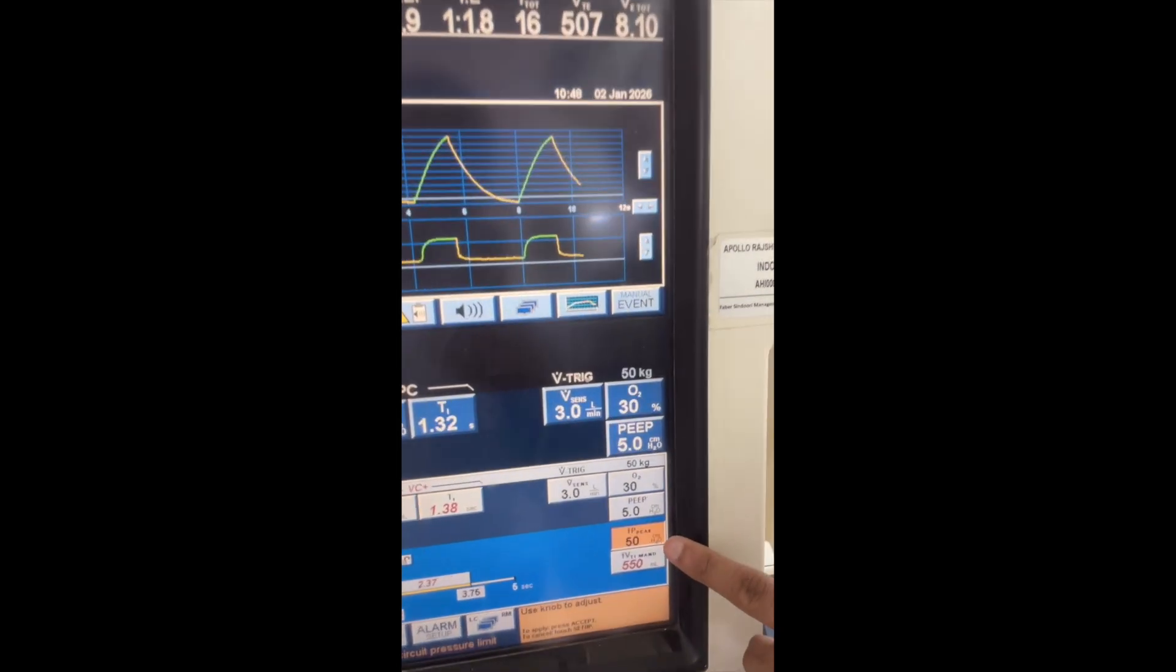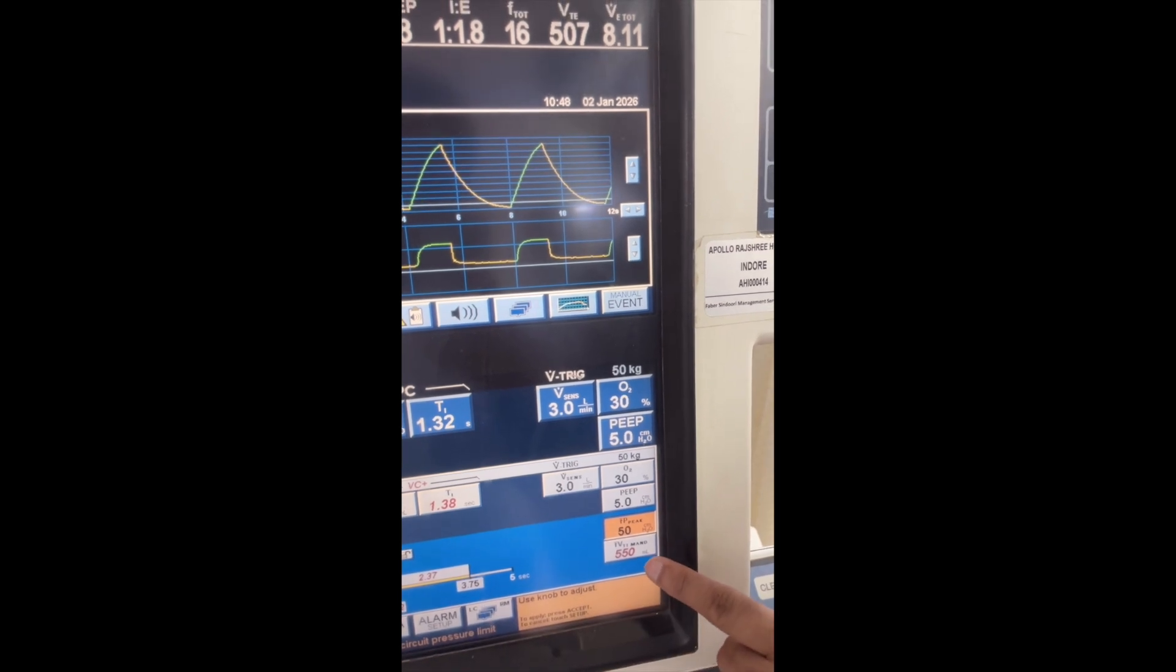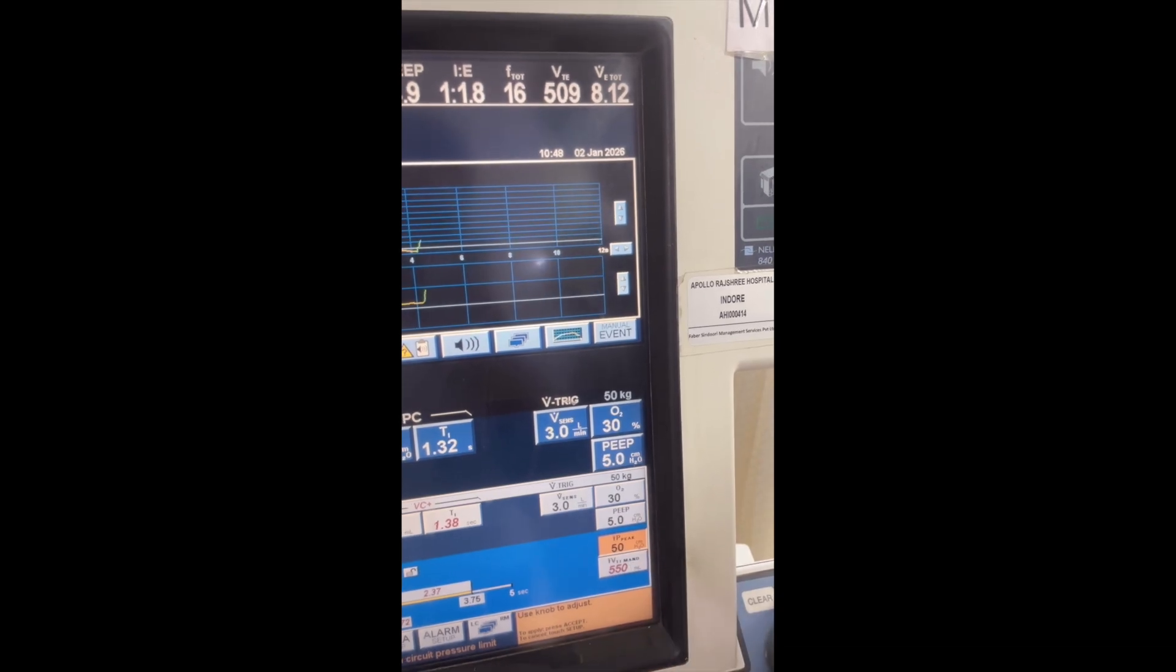This is the highest limit of peak pressure - beyond this the pressure will not increase to deliver this tidal volume. And this is the mandatory 550 tidal. If it goes beyond 550 tidal volume, then the ventilator cuts off with an alarm limit.